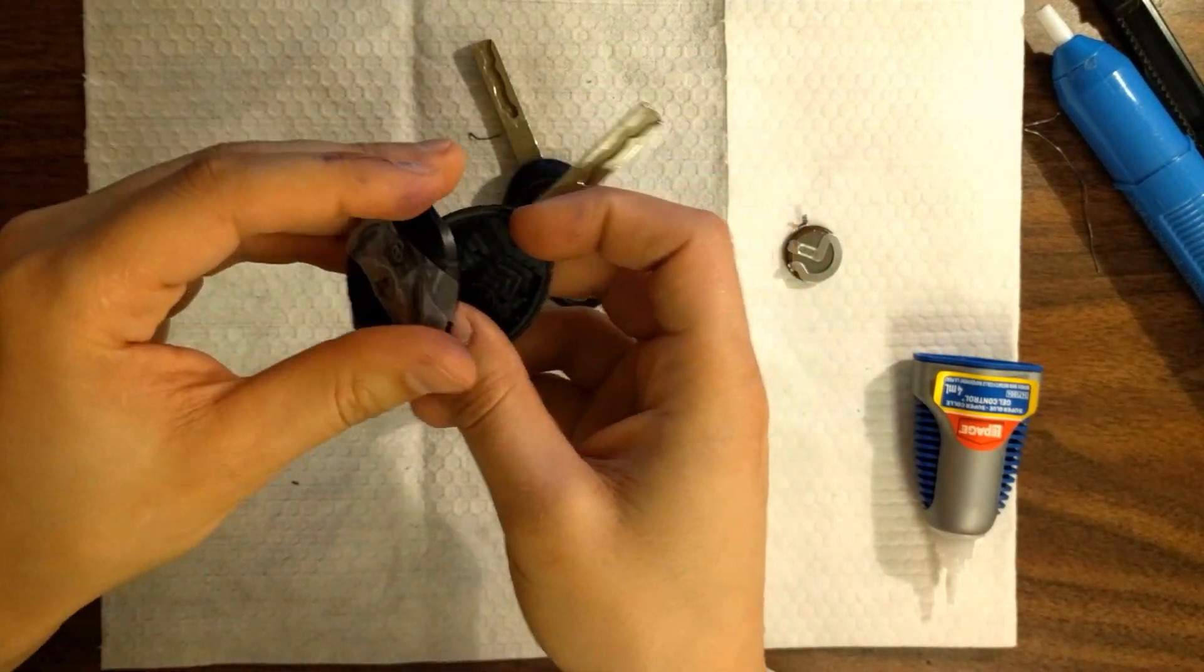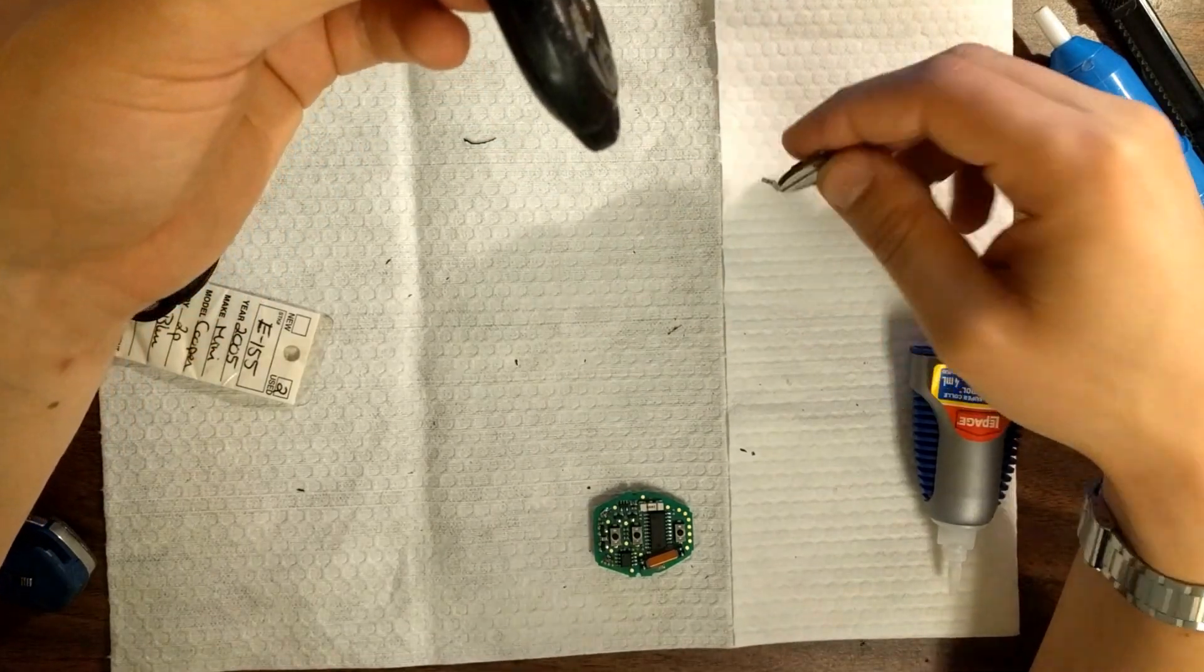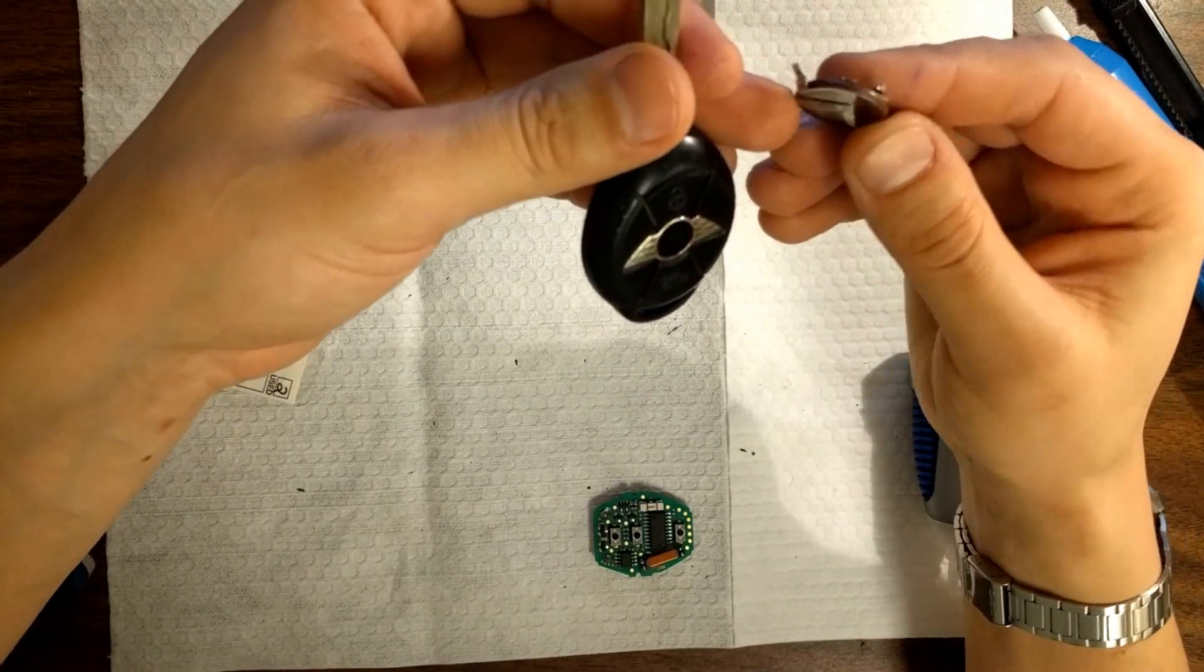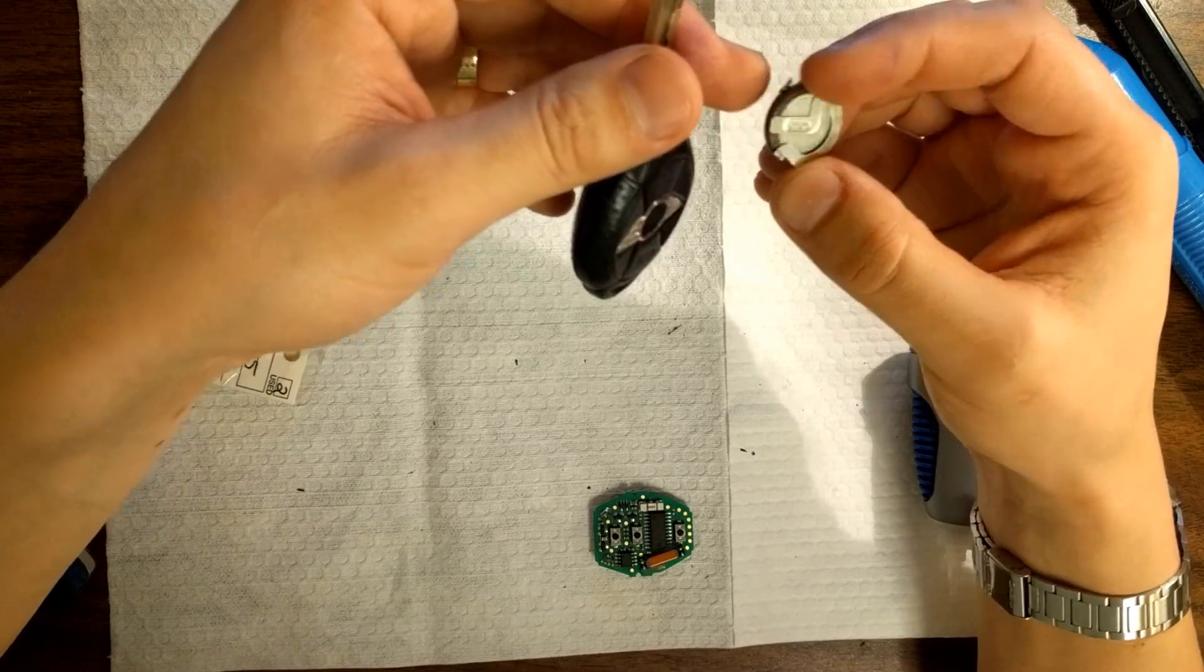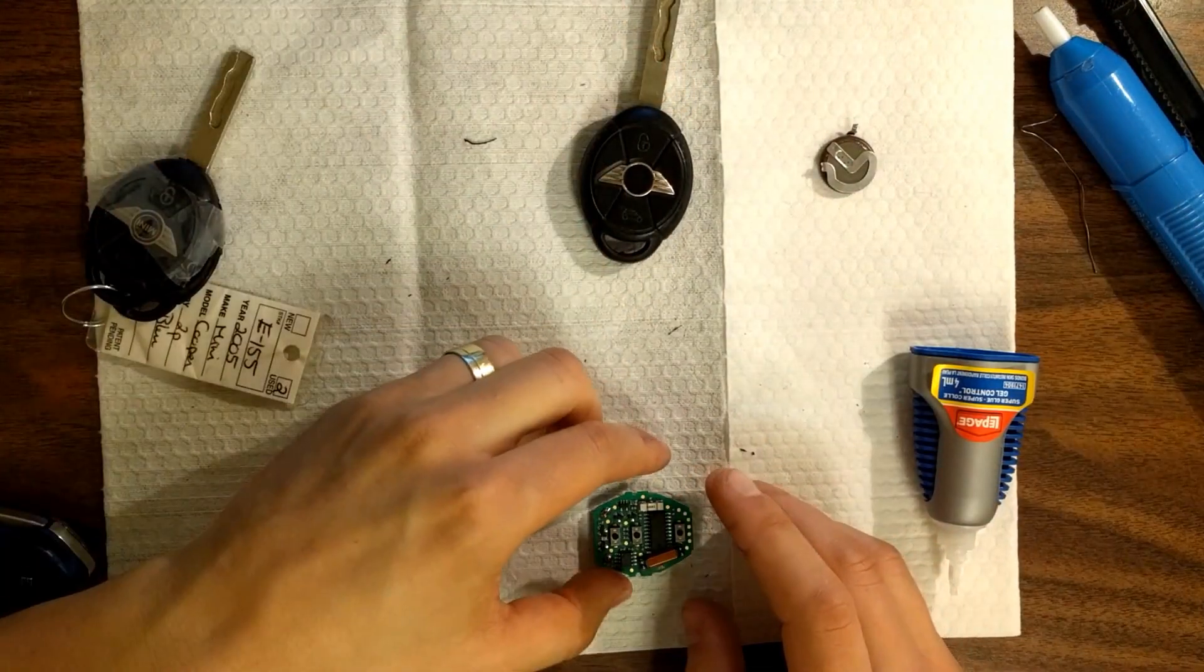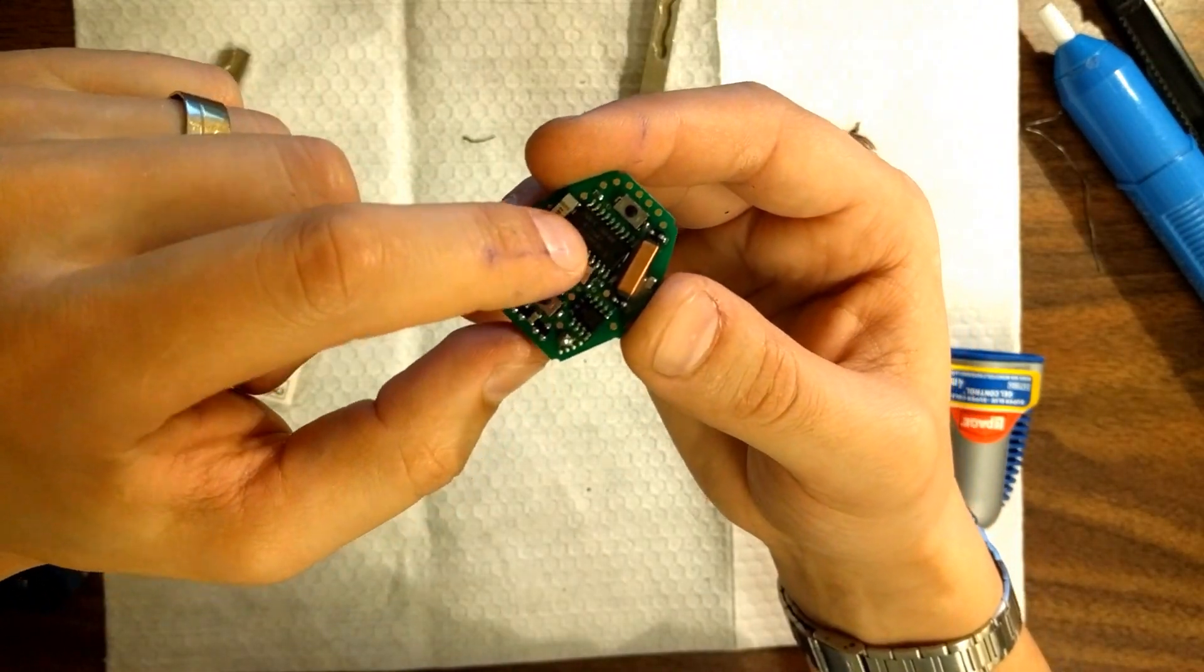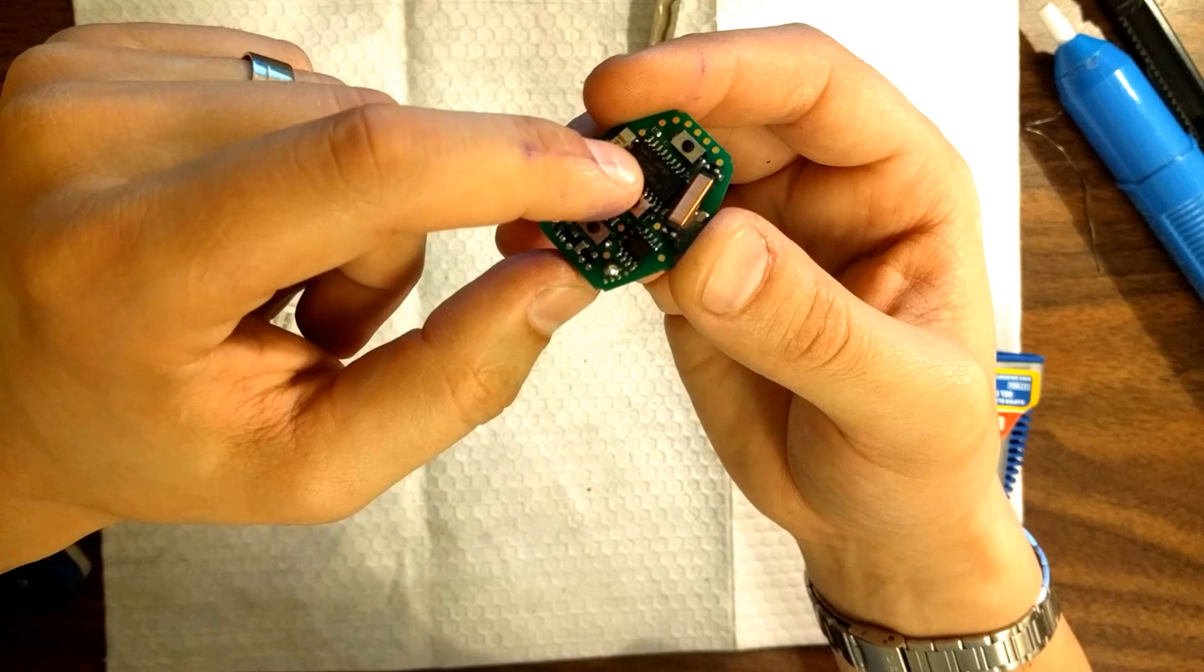This is actually my backup key. I've just fixed this one a few minutes ago. I've replaced the battery - you can check it in the link connected to this one - and my replacement key has a broken button. The close button is broken, see?